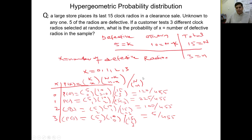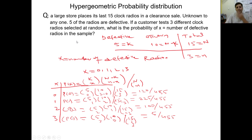Here is a simple example: A large store places its last 15 clock radios in a clearance sale. Among those 15 clock radios, 5 radios are defective, but nobody knows — only the store owner knows. If a customer tests 3 different clock radios selected at random, what is the probability of x number of defective radios in the sample? The first property: there are 2 possible outcomes — the radio will be working or defective.